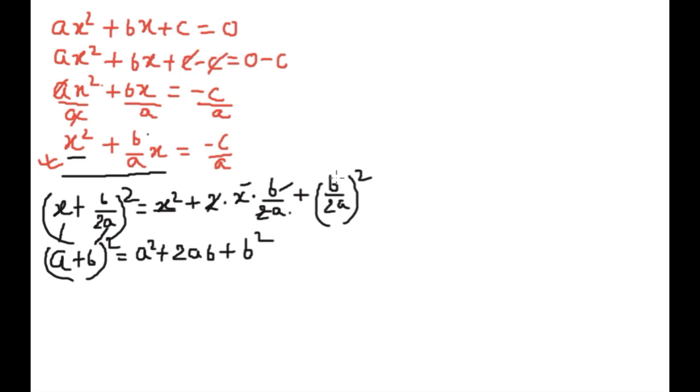Now the remaining is (b/2a)x whole square, so we will do addition of (b/2a) whole square and we will get the formula (x + b/2a) whole square. We are adding (b/2a) whole square both the sides. Whatever we do, we will do on both sides, whether addition, subtraction, multiplication, or division, we will do both the sides.